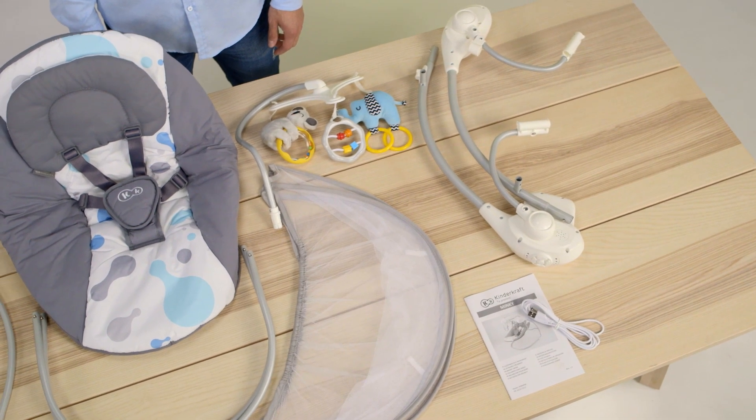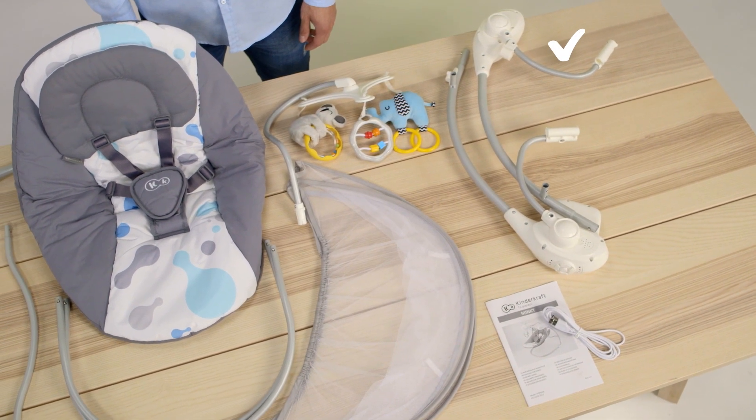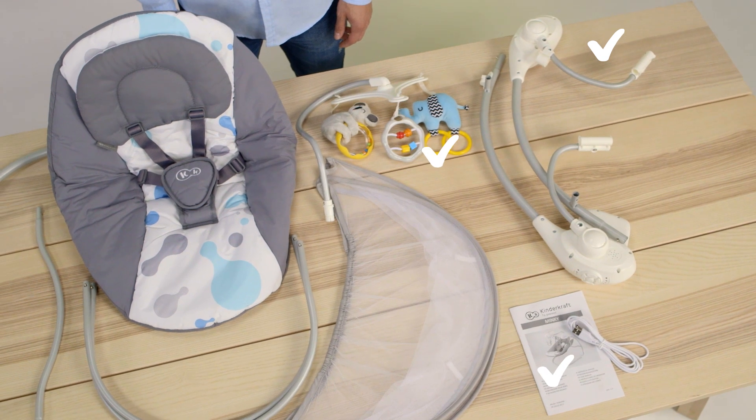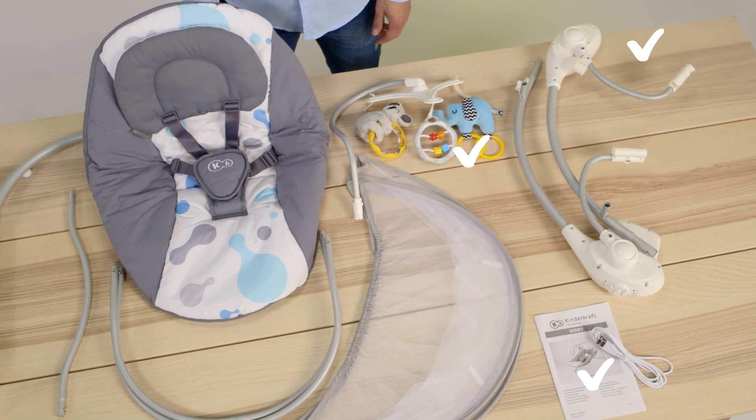Two sides, one with the control panel, handle with toys, manual and a USB cable, mosquito net, seat.